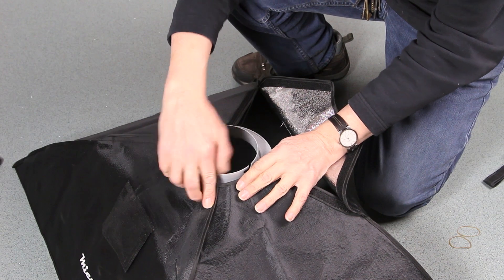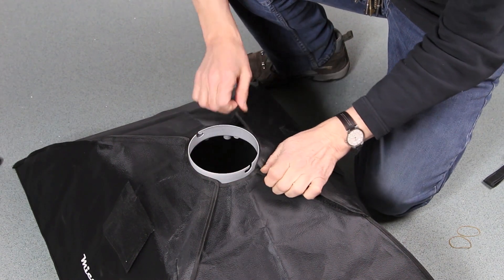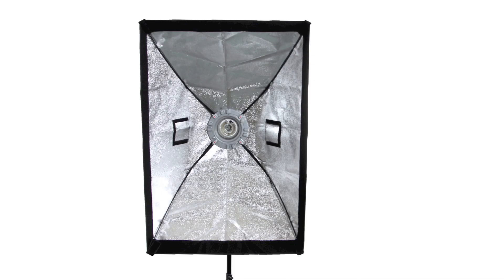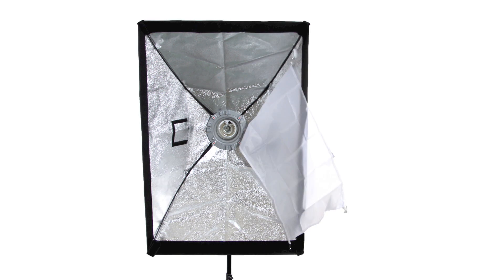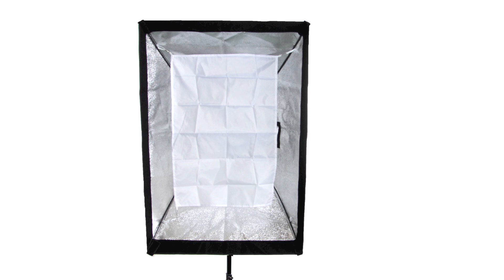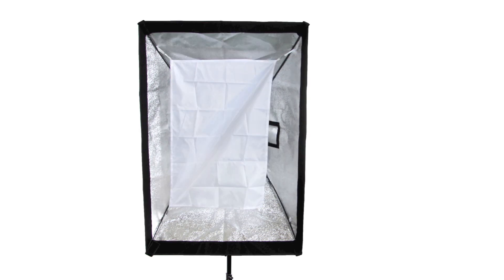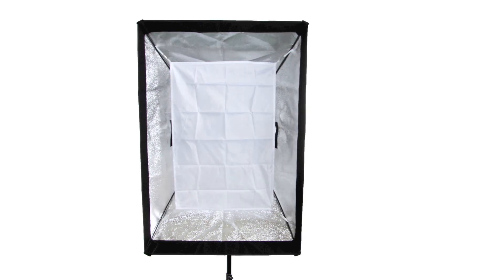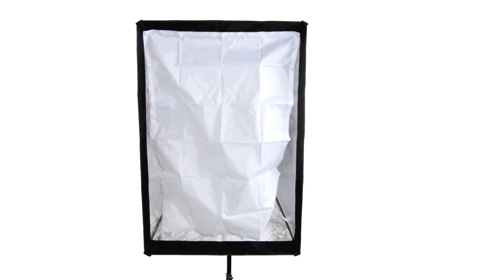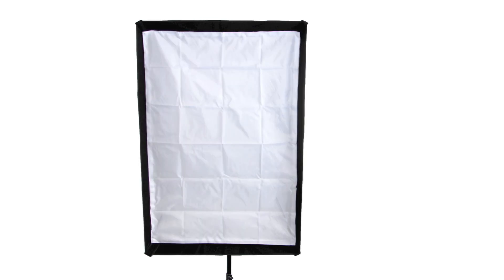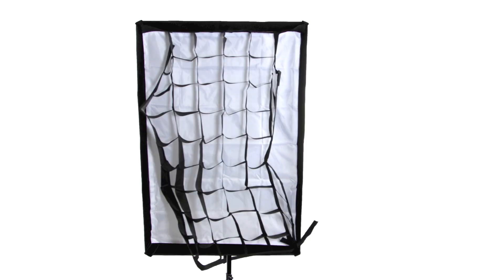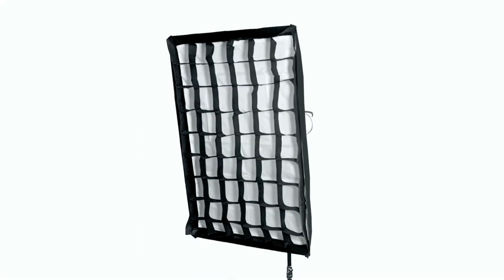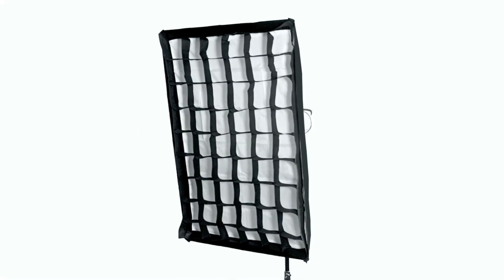You turn it over and fix the velcro, and there you are, that's fixed up. You then got an inner diffuser which fits up on little clips. Once you know diffusing, you've got an outer diffuser that fits with the hook and eye system. Then you've got the grid that again fixes with the hook and eye and fixes in to give you a complete softbox.